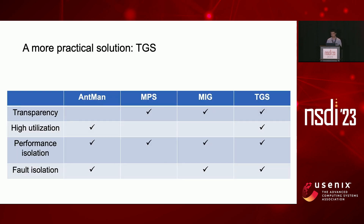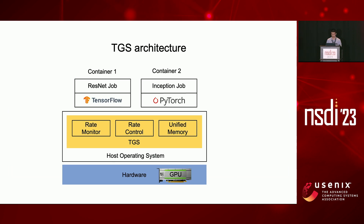To address these problems, we present TGS, a system that provides transparent GPU sharing to DL training in container clouds. Different from application layer solutions, TGS works at the OS layer beneath the containers and is entirely transparent to users, allowing them to use any version of any DL framework — TensorFlow, PyTorch, or a custom framework. TGS leverages adaptive rate control and transparent unified memory to simultaneously achieve high GPU utilization and performance isolation. Its core is a lightweight interaction layer between containers and GPUs that intercepts system calls and regulates GPU resource usage for concurrent jobs. Containers and applications are unaware of TGS.